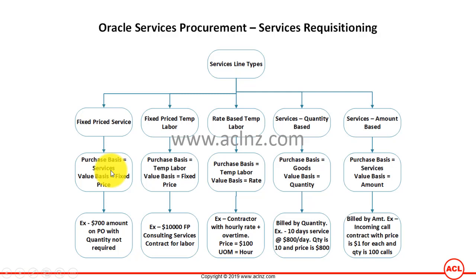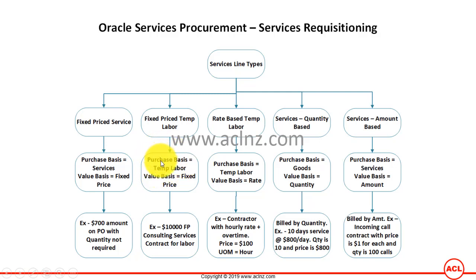Services could be anything — I was giving an example of a contractor, but here it could be something else, like phone services or a remote service. Whereas Fixed Price Temp Labour specifically means temporary labour, which is essentially a contractor. So this line type specifically would make your requisition for a contractor.